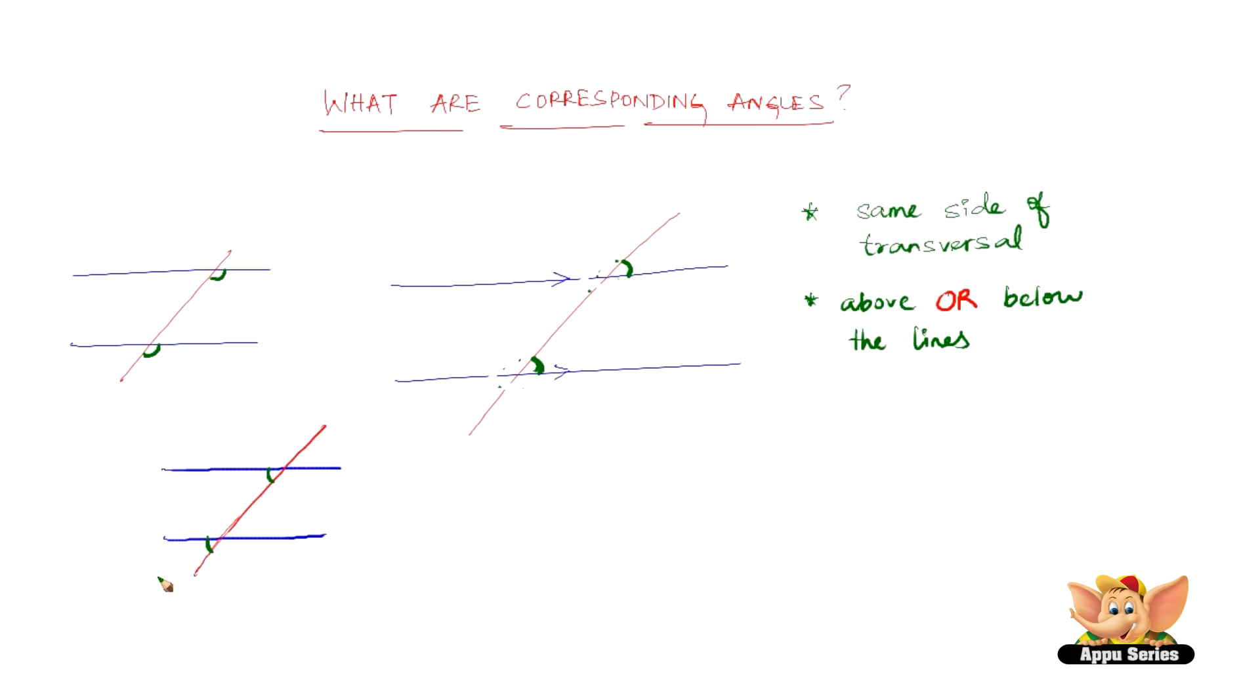And another possibility of corresponding angles will be these. This one and this one. Both on one side of the transversal, both above the blue line. Quite simple, right? But this is very important, so these are corresponding angles.